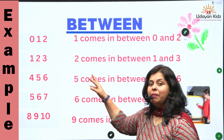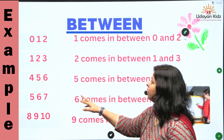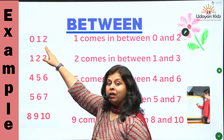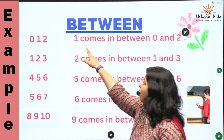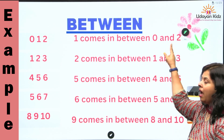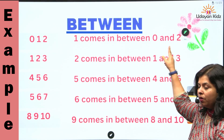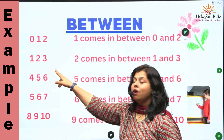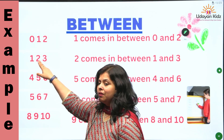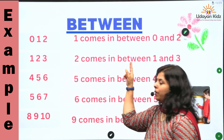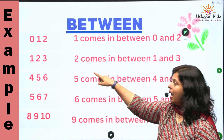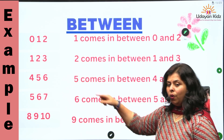Here are some examples of between. Where does number one come? One comes in between zero and two. Next, where does number two come? Number two comes in between number one and three.